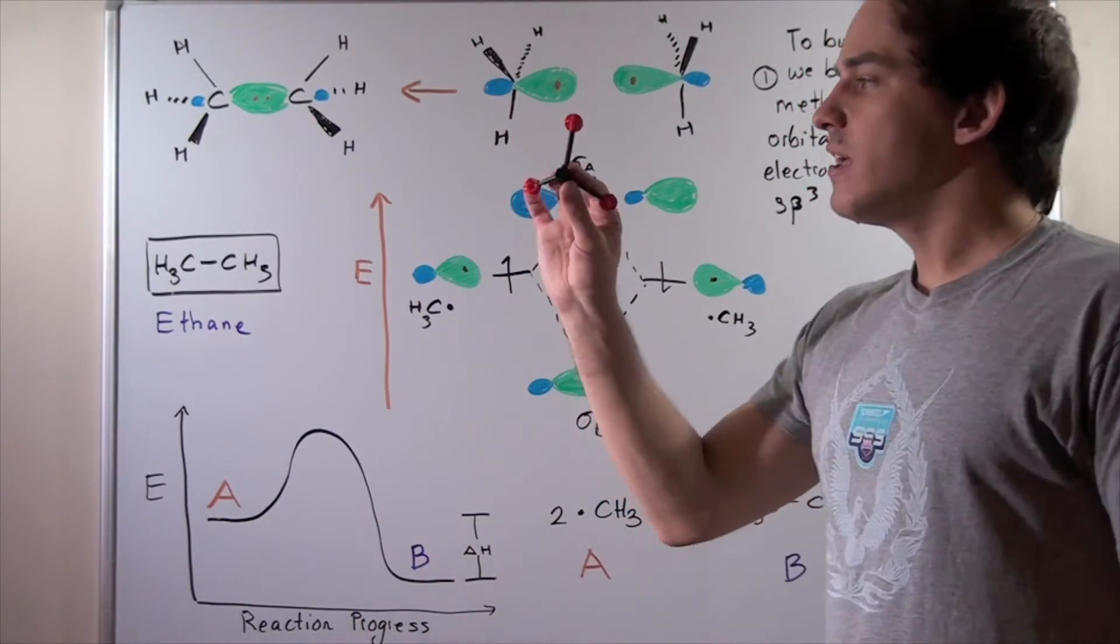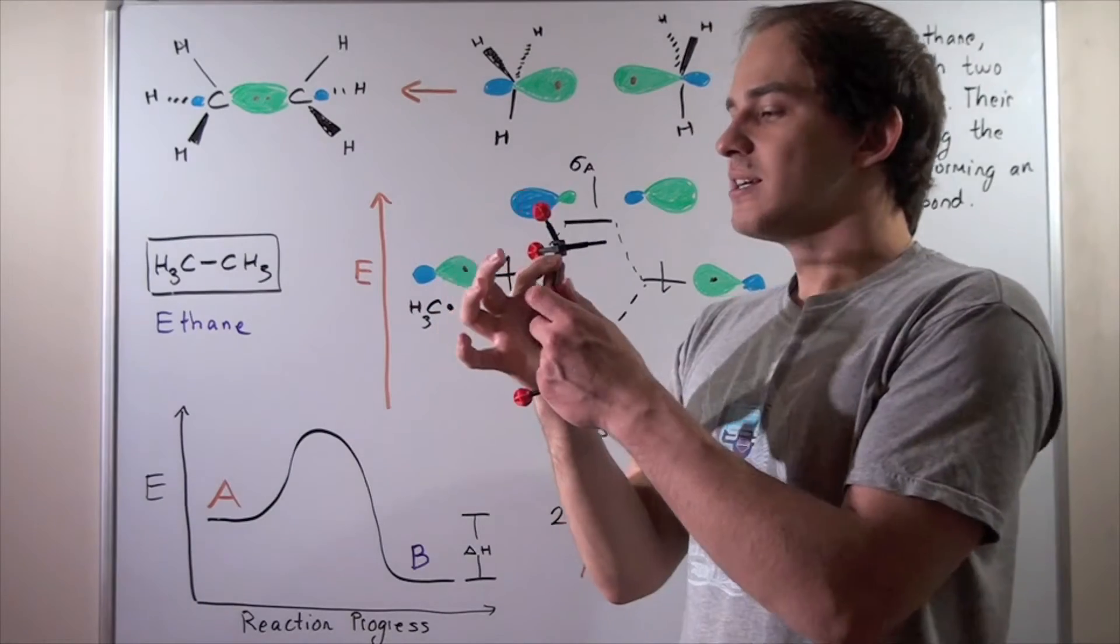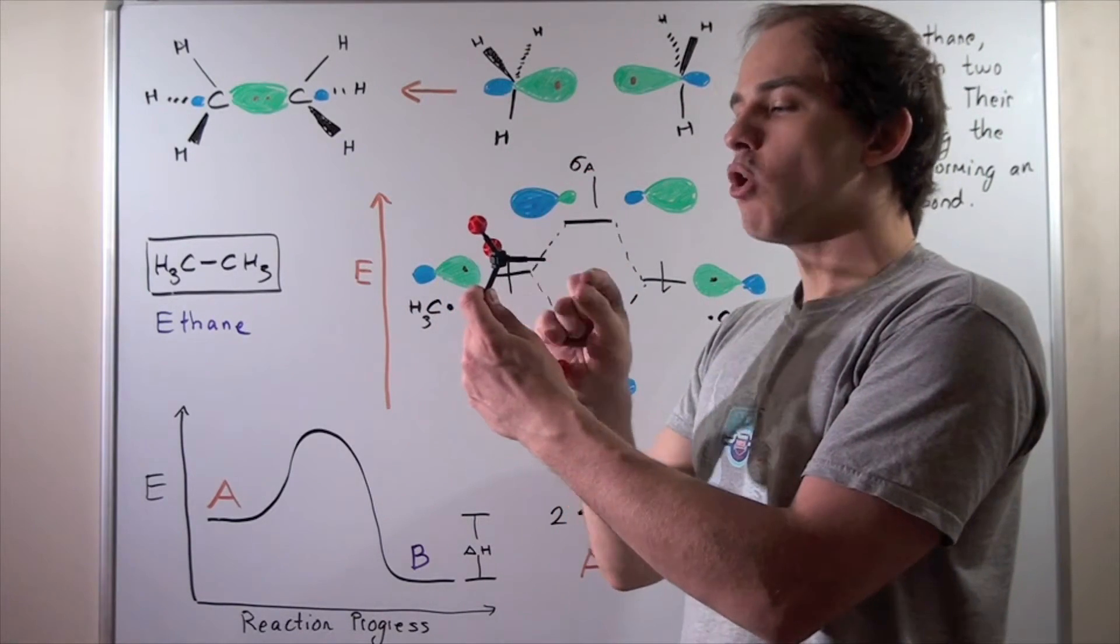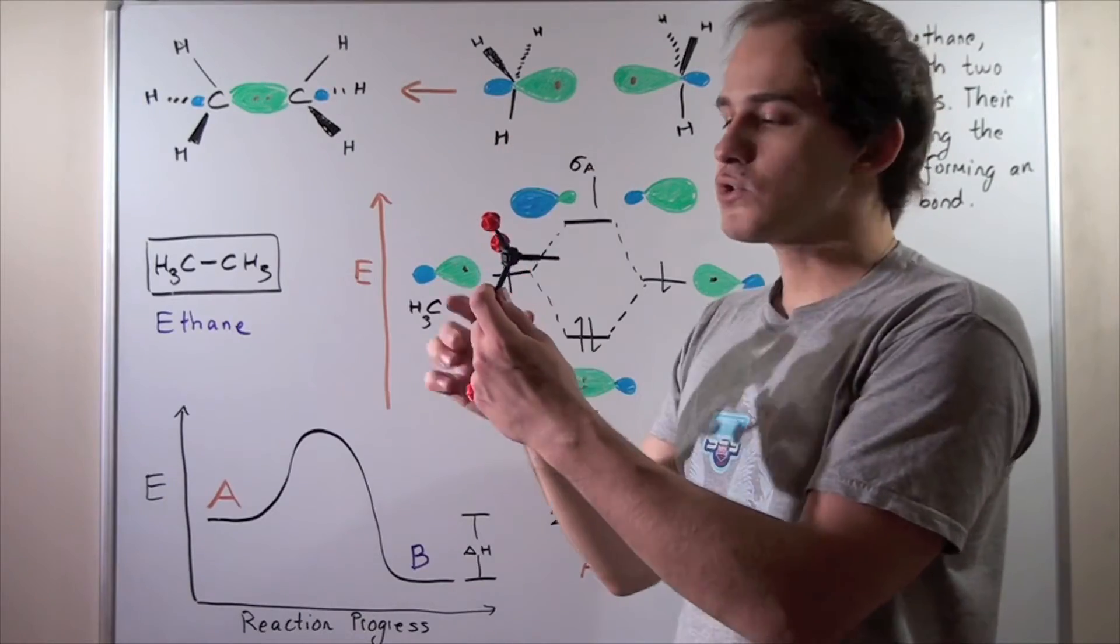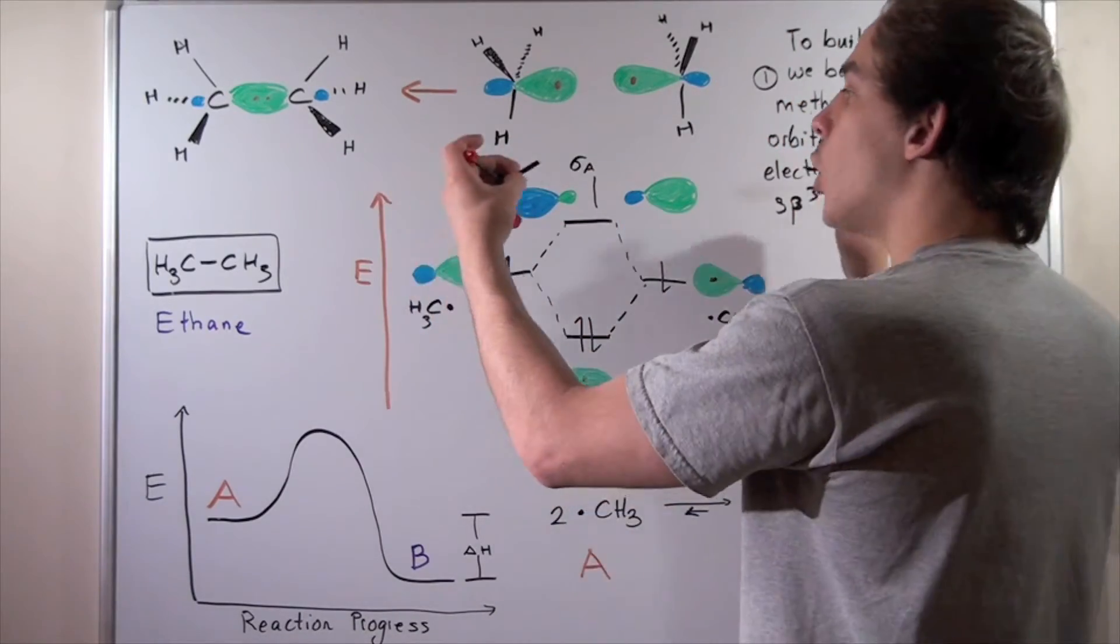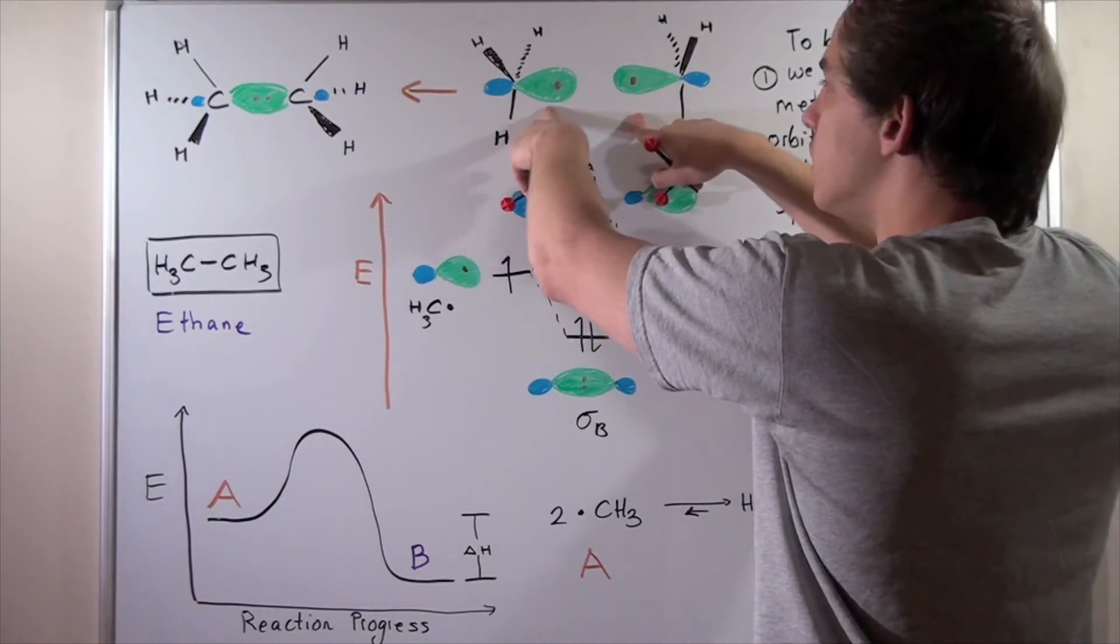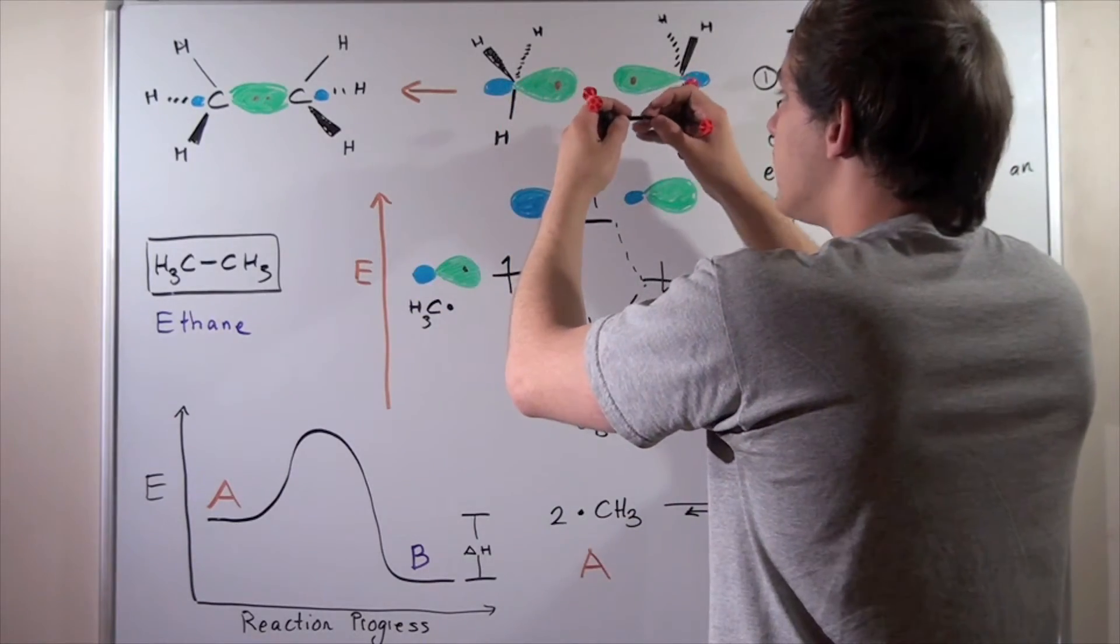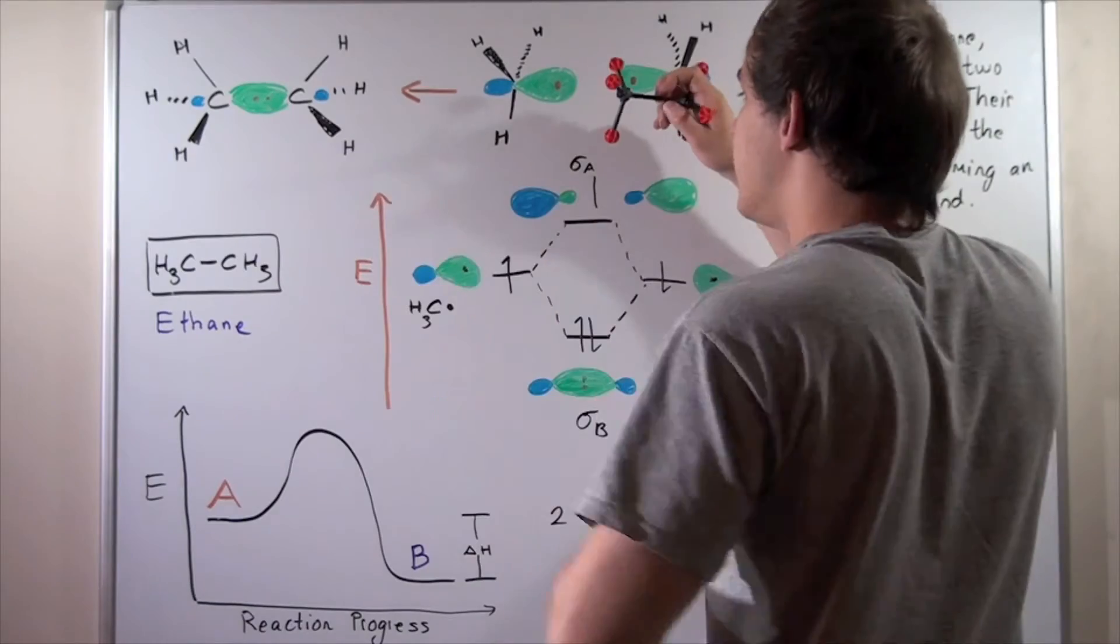Once again, individually, these methyl radicals contain sp2 hybridized bonds with approximately 2p orbital that contains our electrons. But when they come closer, these orbitals become sp3 hybridized, which eventually form the bond forming our ethane molecule.